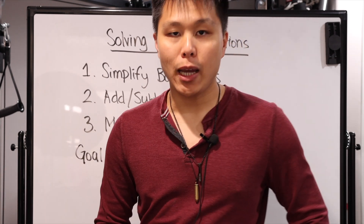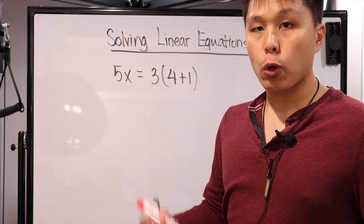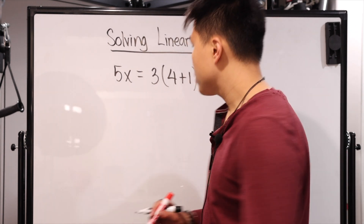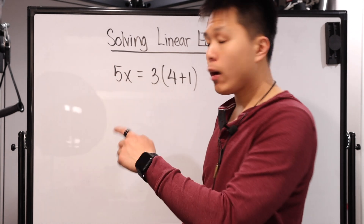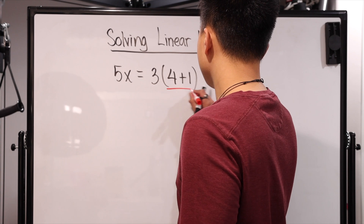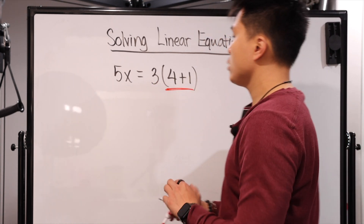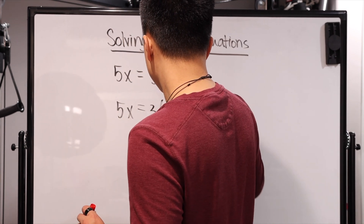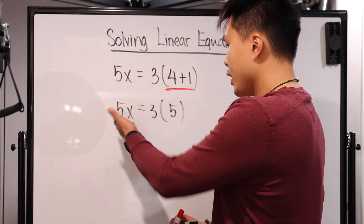Let's look at some examples. The first problem: you have 5x equals three times the quantity of four plus one. Our first step is to simplify both sides. The first side, 5x, you can't do anything else — leave it like that. Now simplify the other side. With PEMDAS, we work inside the parentheses first, which is just a simple addition: four plus one. So the next step is 5x equals three times five. Remember, a number next to parentheses means multiplication.